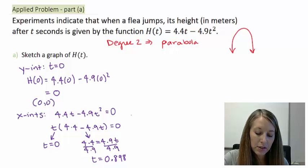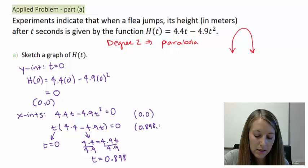It does not come out evenly, so let me just round it to three decimal places. t equals 0.898. So, if I put these in intercept format, the first one, of course, is the origin, and the second one is (0.898, 0).